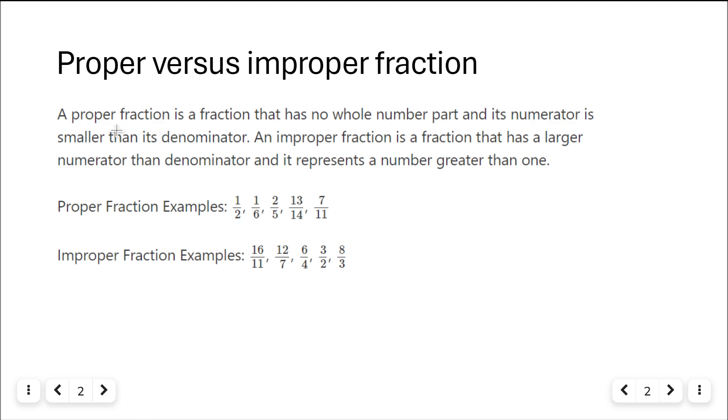So a proper fraction is a fraction that has no whole number part and its numerator is smaller than its denominator. Here's a proper fraction: one-half, one-sixth, two-fifths. In all of these fractions, the denominator is larger than the numerator or the numerator is smaller than the denominator.